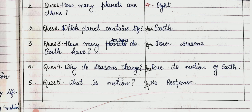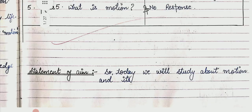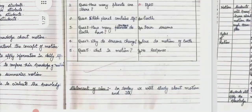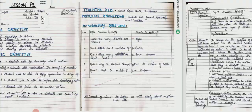Fourth question: why do seasons change? Answer: due to the motion of Earth. Fifth and last question: what is motion? No response — this is a problematic question for students. After introductory questions, we note the statement of aim: today we will study about motion and its examples.